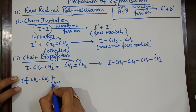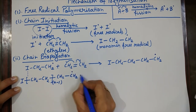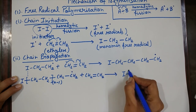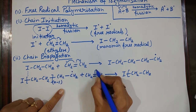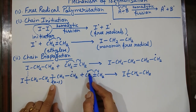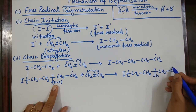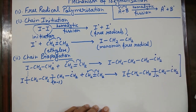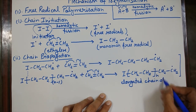Continuing chain propagation: the growing free radical species I–[CH2–CH2]n• reacts with another monomer unit. Bond formation occurs, electrons are transferred, and the chain extends to I–[CH2–CH2](n+1)•. This whole process of chain propagation results in an elongated polymer chain, with the free radical always at the end.